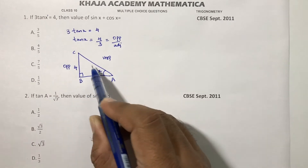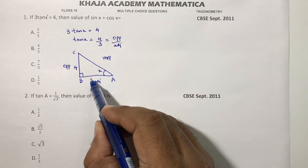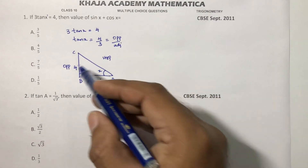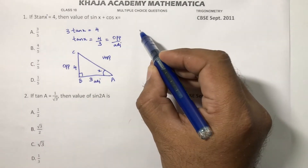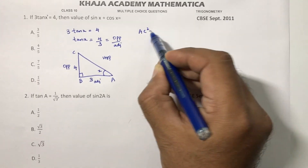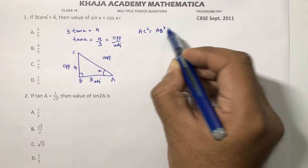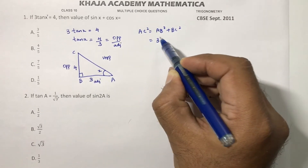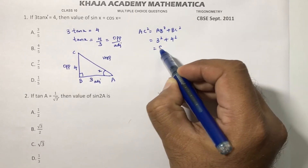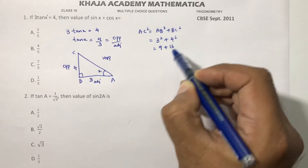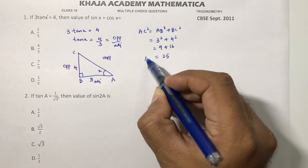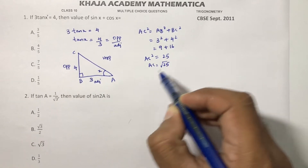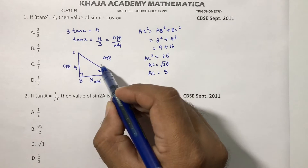So opposite is 4 and adjacent is 3. Apply Pythagoras theorem: AC squared equals AB squared plus BC squared. So 3 squared plus 4 squared equals 9 plus 16, which is 25. So AC squared is 25, AC is root 25, so AC equals 5.